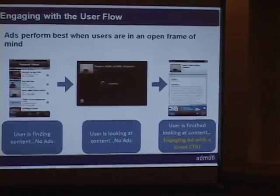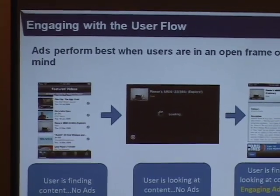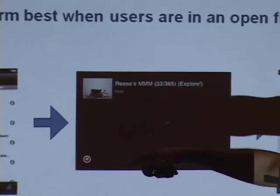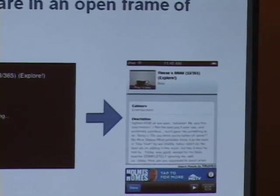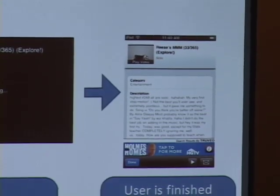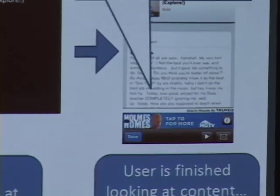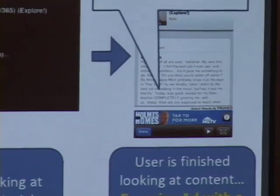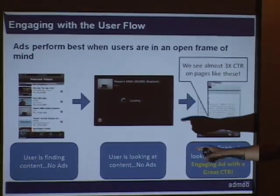Here's another example — Truvio, a video app. They did a good job of ad placement. They have their scrolling featured video section, and they didn't put an ad there, because users are looking to find content and are not in an open frame of mind. Once a user clicks on a video and the content is loading, they could have put an ad there but decided not to. Finally, after a user has seen a video, they place the ad at the bottom. At that point, it's a very engaging placement — the user is open for it and hasn't been shown ads for two or three screens prior. We actually see about a 3x increase in click-through rates on pages like these versus other placements. It makes a lot of difference.